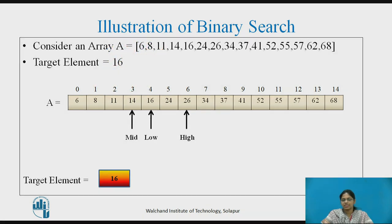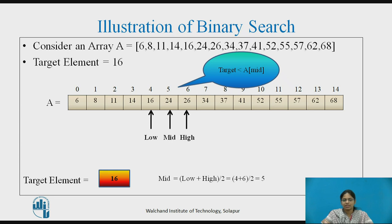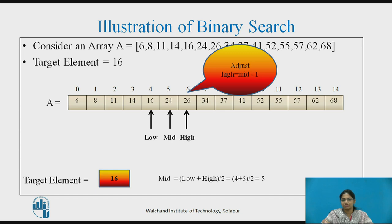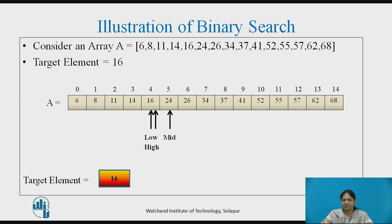Low is adjusted to mid plus 1. With the new values of low equal to 4 and high equal to 6, we compute the mid value, which is 5. We compare A[mid] with the target element, and the target is lesser than A[mid]. So we adjust high to mid minus 1 in the next iteration.